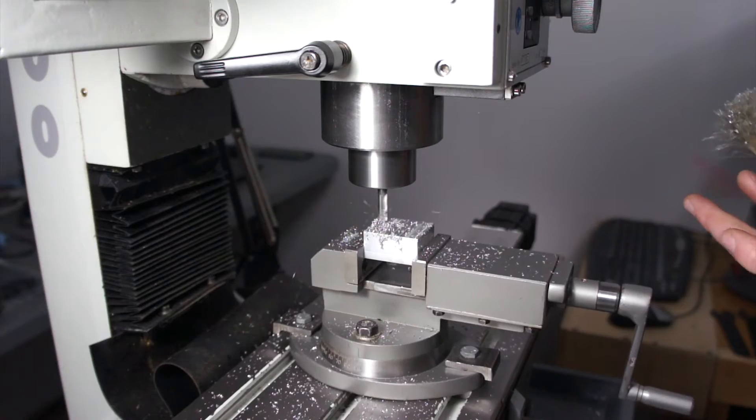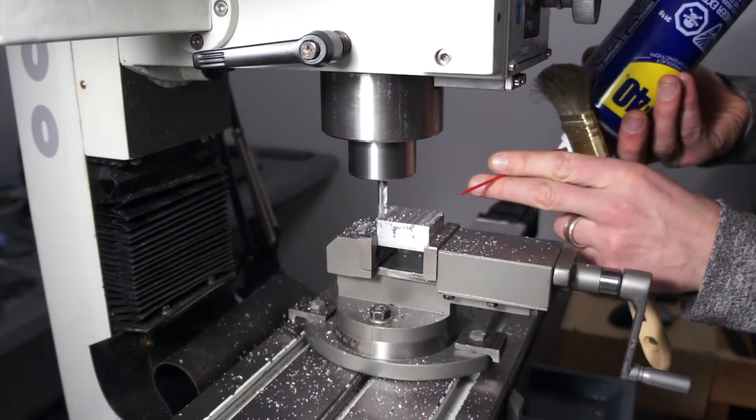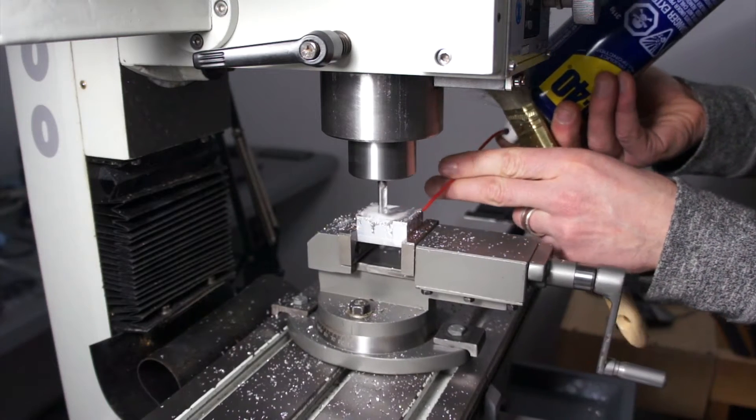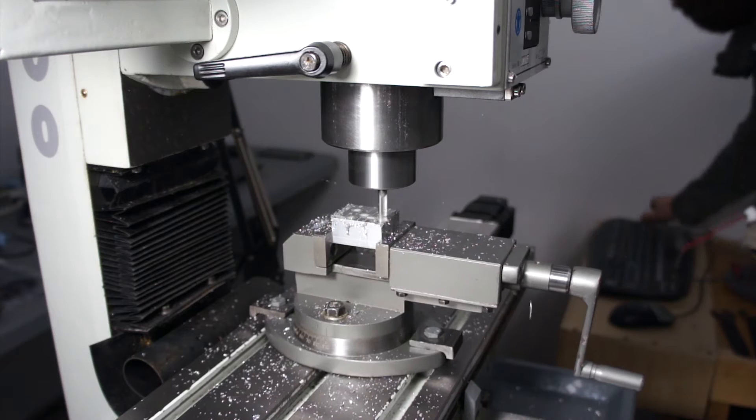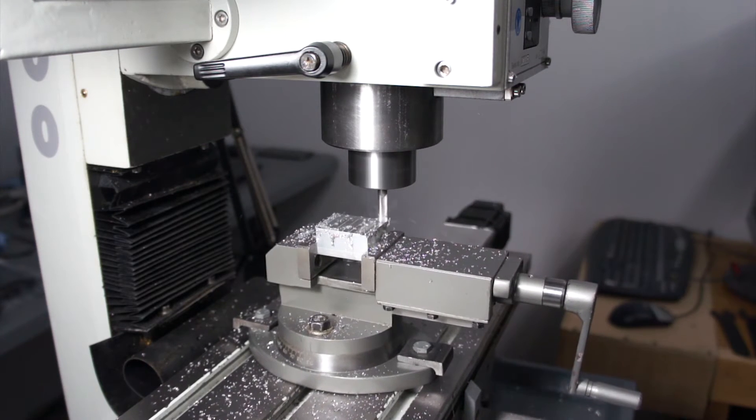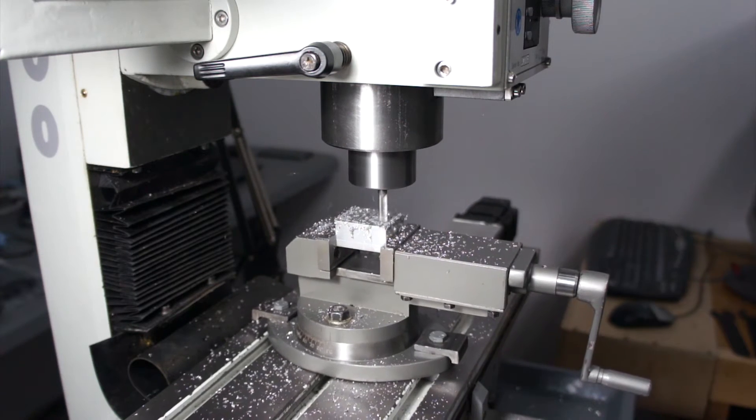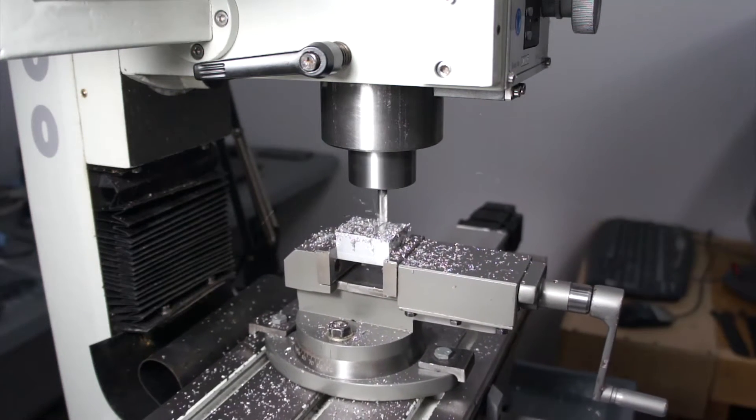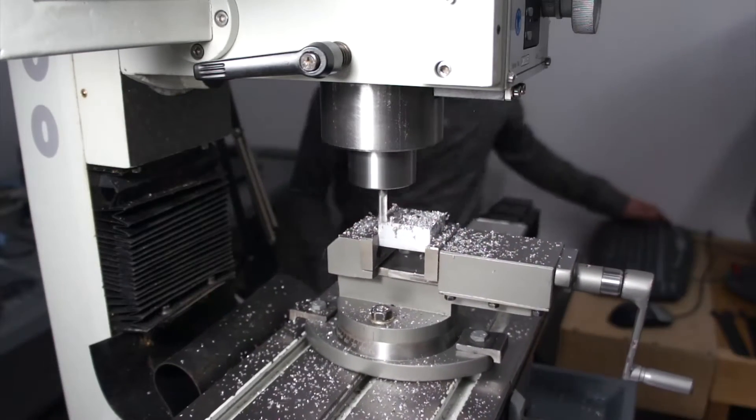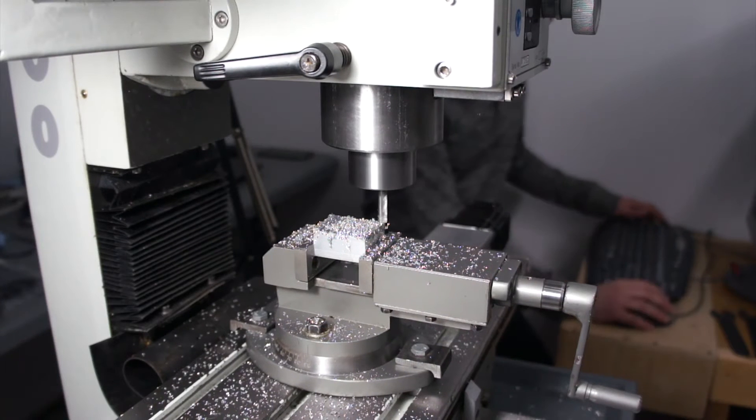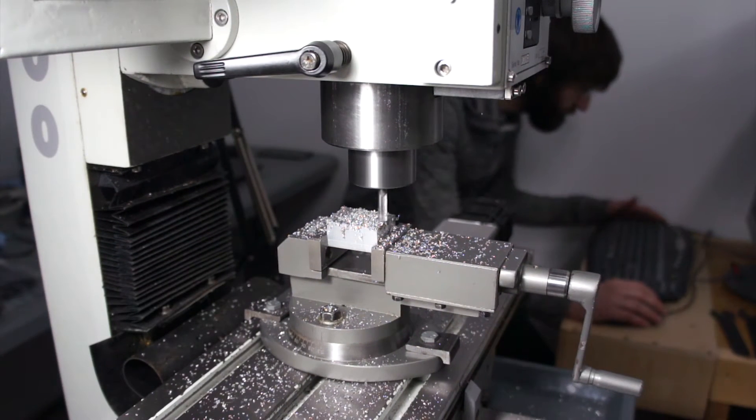It's a four flute quarter inch end mill. We're cutting at one thou chip per tooth with a depth of 0.1 inch. Actually, I think this facing operation is doing 0.05 inch depth of cuts rounding down. This little mill can only spin up to about 2400 RPM, so you're somewhat limited when it comes to material removal rate, but for a hobby mill it seems to function just fine.